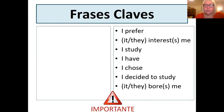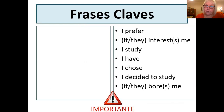Some key phrases here that you're going to be using in this topic. I've given you the English and I'd like you to come up with the Spanish. I suggest you spend five minutes deciding here. You have different tenses: I prefer, I study, I have, I chose, I decided. I chose and I decided will be in the preterite tense. Please have a good think about that — it'll take you possibly seven or eight minutes thinking about it to look up and conjugate the verbs.